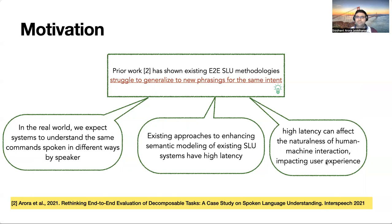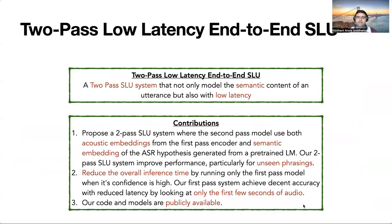A number of approaches have been proposed to learn the semantic content directly from the audio. However, they often have high latency which can affect the naturalness of human-machine interaction when these systems are deployed in commercial applications like voice assistants. In this work, we propose a two-pass SLU architecture that extends prior research by building SLU systems that not only model the semantic content of an utterance, but also with low latency.